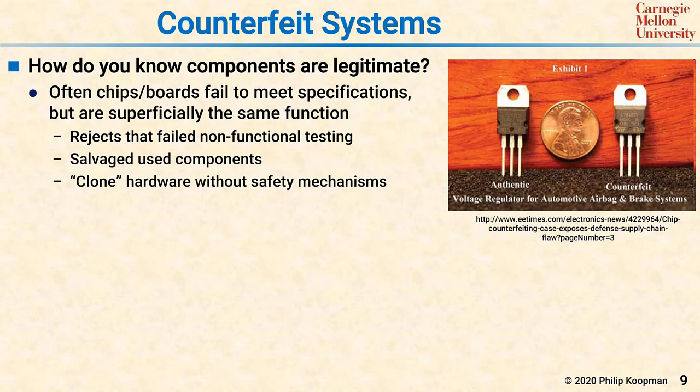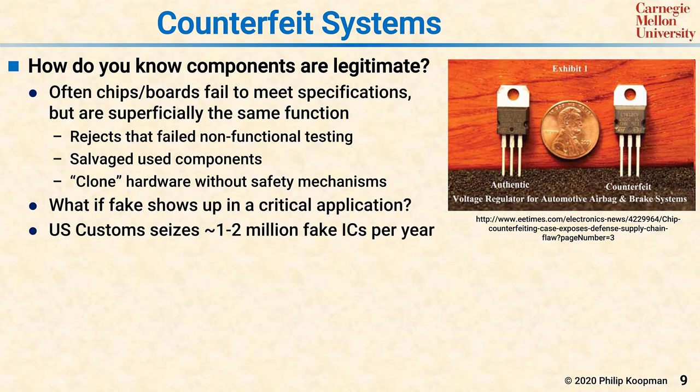Sometimes there's clone hardware with a reduced parts count to save cost — for example, a power supply that regulates power just fine until a component fails, but there are no safety mechanisms, so when it fails it catches fire instead of doing a safe shutdown. This is a big concern in aviation, and as cars become more safety critical, counterfeit components inside self-driving cars are going to be an issue. U.S. Customs seizes one or two million fake integrated circuits per year — and that's just the ones they catch — so this is a significant issue in critical systems with long supply chains.